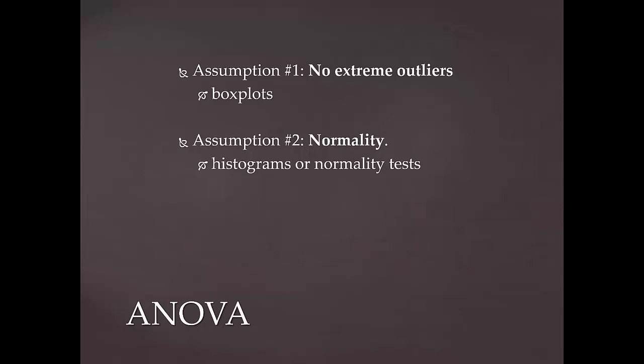On the histogram, what we're hoping to see, if normality is assumed, is a symmetrical, bell-shaped curve. For the normality test, we are hoping for non-significant results, or results with a significance level of more than 0.05, as this indicates normality. This is checked for each of the grouping variables.